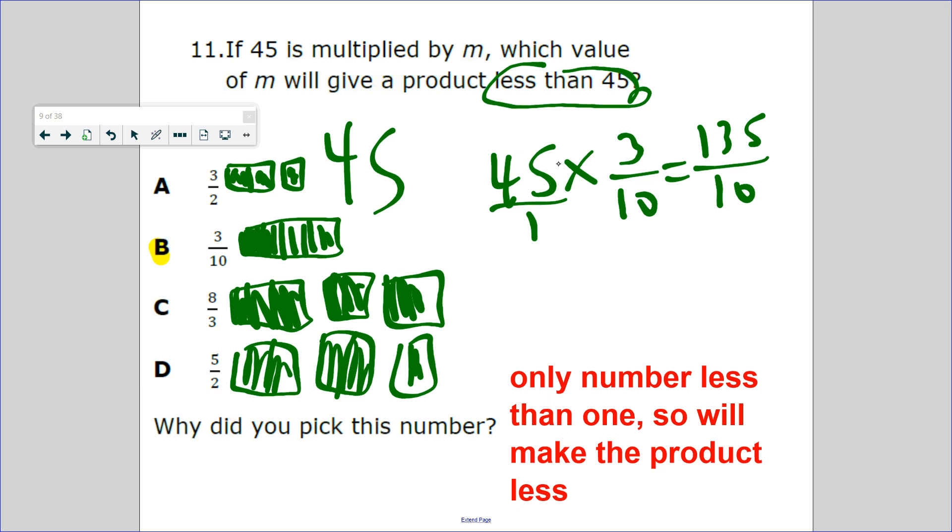135 divided by 10 is 13.5, which is less than 45.